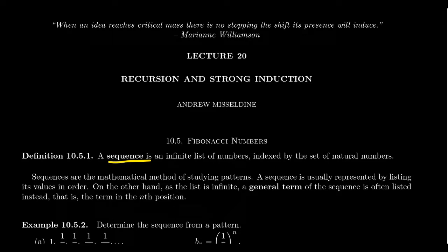Let's first make sure we understand what a sequence is. A sequence is an infinite list of numbers indexed by a set of natural numbers. We've talked about lists before in this lecture series — typically we're talking about finite lists, which may be ordered or unordered, may have repetition or not. This is an important problem for combinatorics. But a sequence is going to be an infinite list, so it goes on forever and ever.